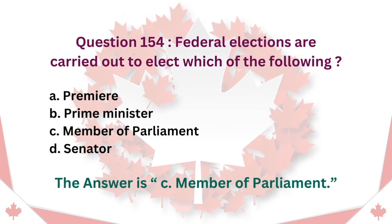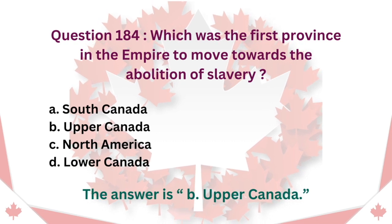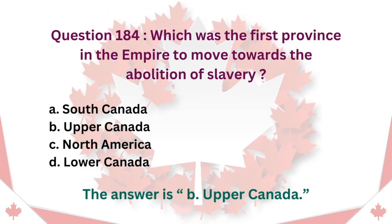Question 154: Federal elections are carried out to elect which of the following? A. Premier. B. Prime Minister. C. Member of Parliament. D. Senator. The answer is C. Member of Parliament.